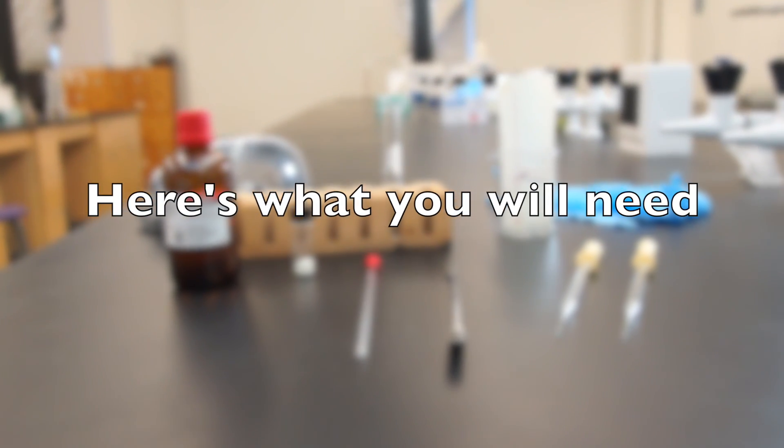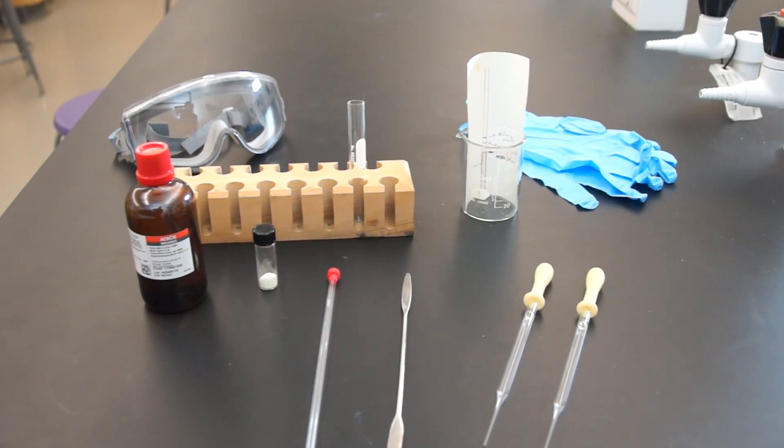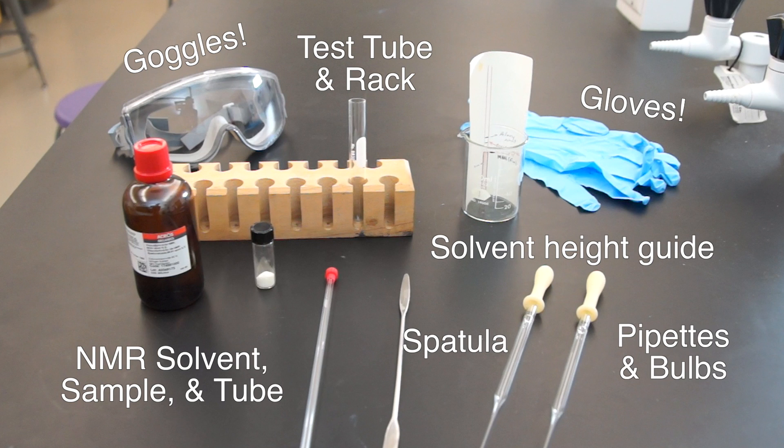To prepare your NMR sample, here's what you'll need: your test tube and rack, solvent height guide, NMR sample, solvent and tube, spatula, pipettes and bulbs. Also, always remember to have your goggles and your gloves.